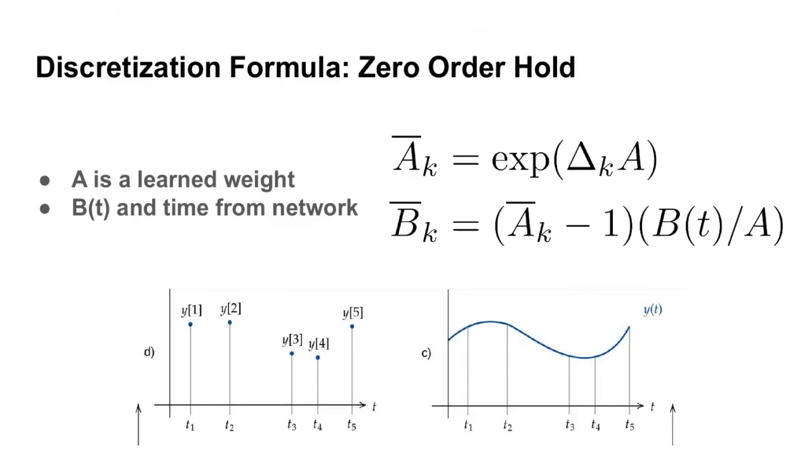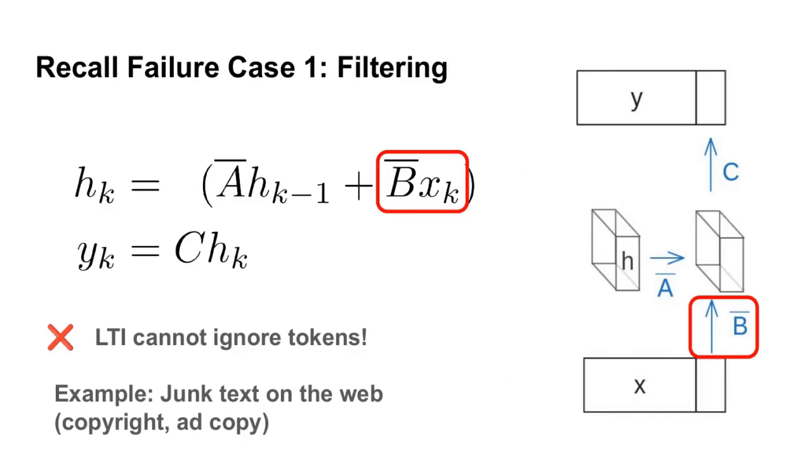So why do this conversion? The continuous time machinery really gives us an intuitive notion of time that's hard to get in the attention representation. To see this, let's look at the discretization formulas. These are the formulas that tell us how to approximate the continuous time formula with an LTV model. These basically need to be run at every forward pass of the model to take into account the predicted delta values. Roughly, they tell us how to treat distances in continuous time between tokens.